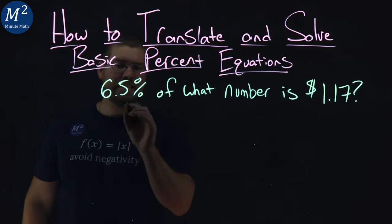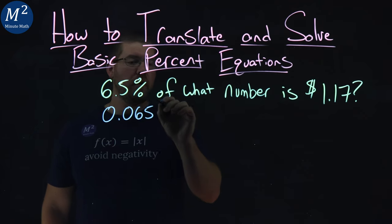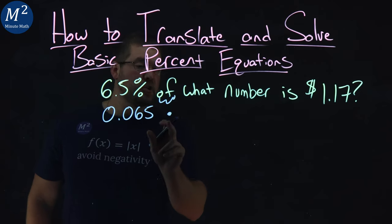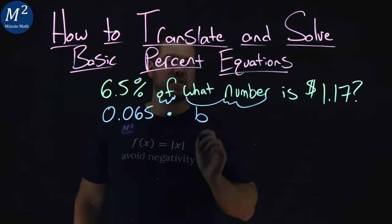6.5% as a decimal is 0.065. Of comes out to be a multiplication. What number? We have to give it a variable. Let's call it B.